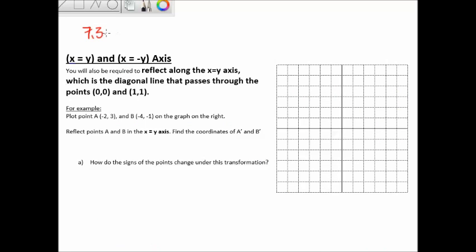Welcome back to grade 8 math. We're continuing on 7.3a, which is on reflections. In the last lesson we looked at the x-axis and y-axis and their rules. Now there are two more axes to look at. The first is called the x equals y axis, which is the diagonal line that passes through 0, 0 and 1, 1 — meaning for every x value, it equals the y value.